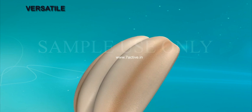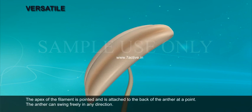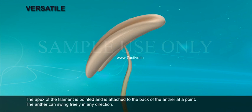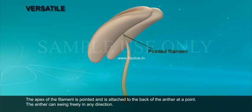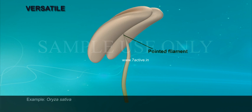Versatile: The apex of the filament is pointed and is attached to the back of the anther at a point. The anther can swing freely in any direction. Example: Rhizocatra (Oryzae).